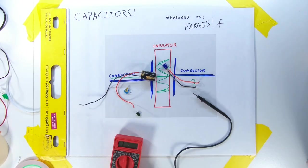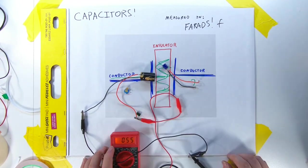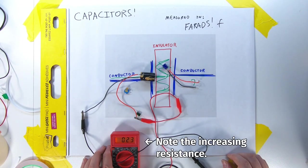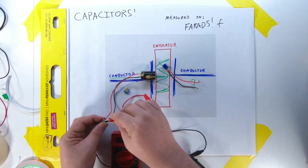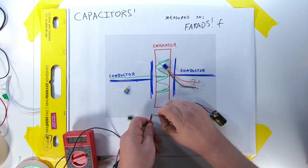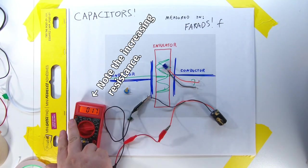One notable thing about a capacitor is that if you hook it up to a multimeter set to resistance, the resistance will slowly increase. In order to measure resistance, the multimeter has to send out a small electrical current. This current will charge the capacitor, and as the capacitor fills with an electric charge, less electricity flows, and resistance increases.